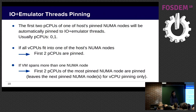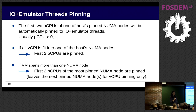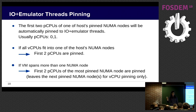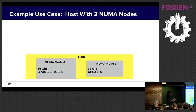Now let's drill down into the pinning issues. We mentioned that IO and emulator thread pinning is set automatically. The algorithm we use: we look at all the physical NUMA nodes in the host, take one NUMA node, and choose the first two physical CPUs — usually zero and one, but not always — and pin the IO and emulator threads to those two physical CPUs. If the VM spans more than one NUMA node, we take only one physical NUMA node and pin the IO and emulator threads to it; all others are used for virtual CPU pinning. Let's see this with a graphic use case to make it clearer.